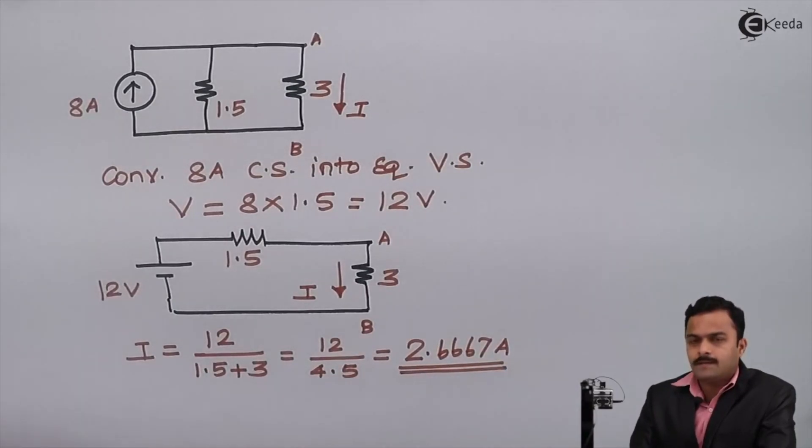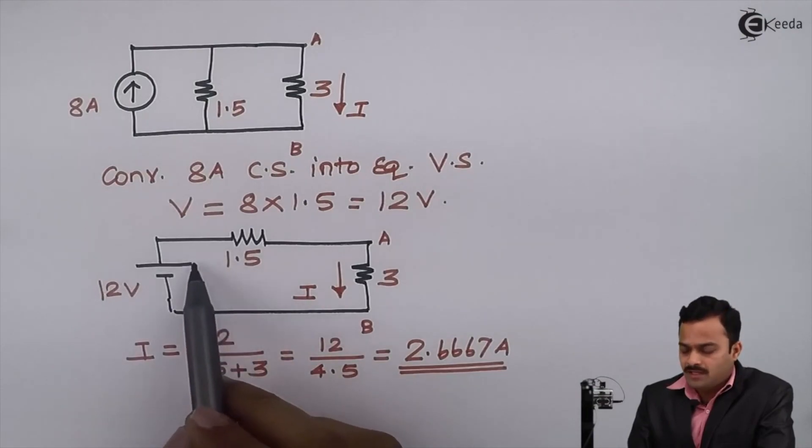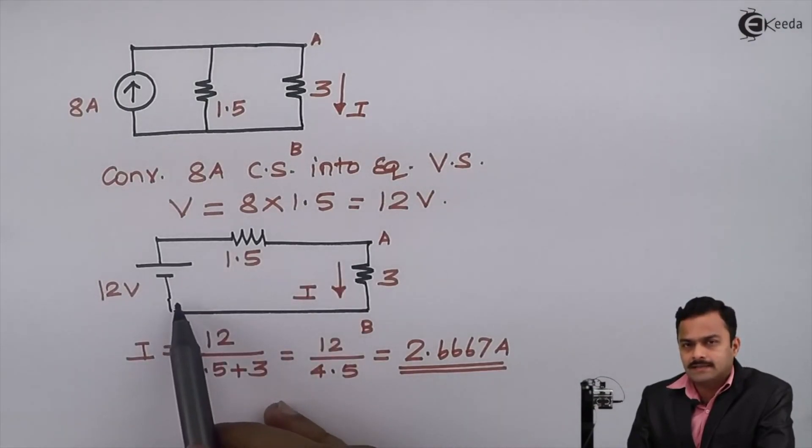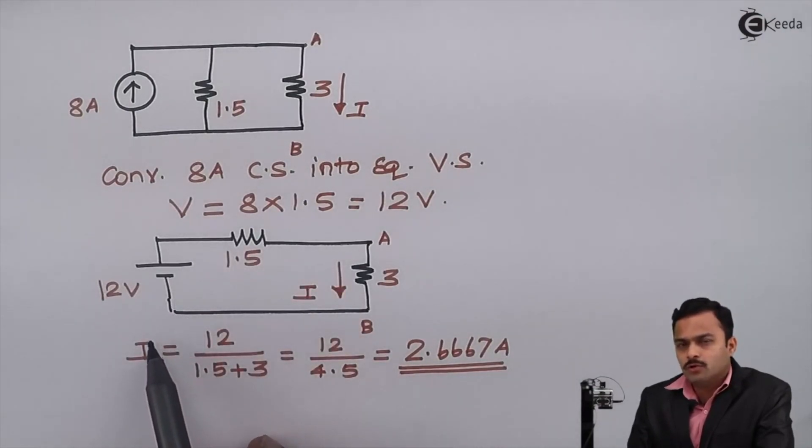So here we have seen that whenever you are transforming current to voltage or voltage to current, ultimately we should have a simple circuit like this where you can use Ohm's law and get an answer. In subsequent videos we will see more numericals based on this. Thank you.